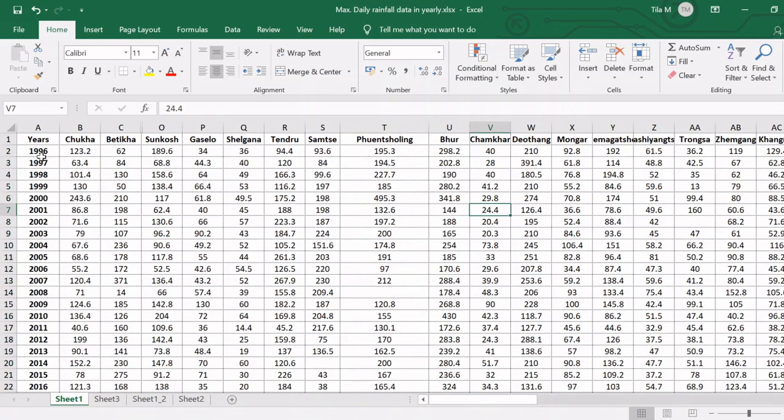As you can see, in the year 1996, the daily maximum was 195.3, and likewise in 1997 it was 194.5. As you scroll down, you can see that one value is missing. We can do an approximation here based on the value observed at nearby stations.